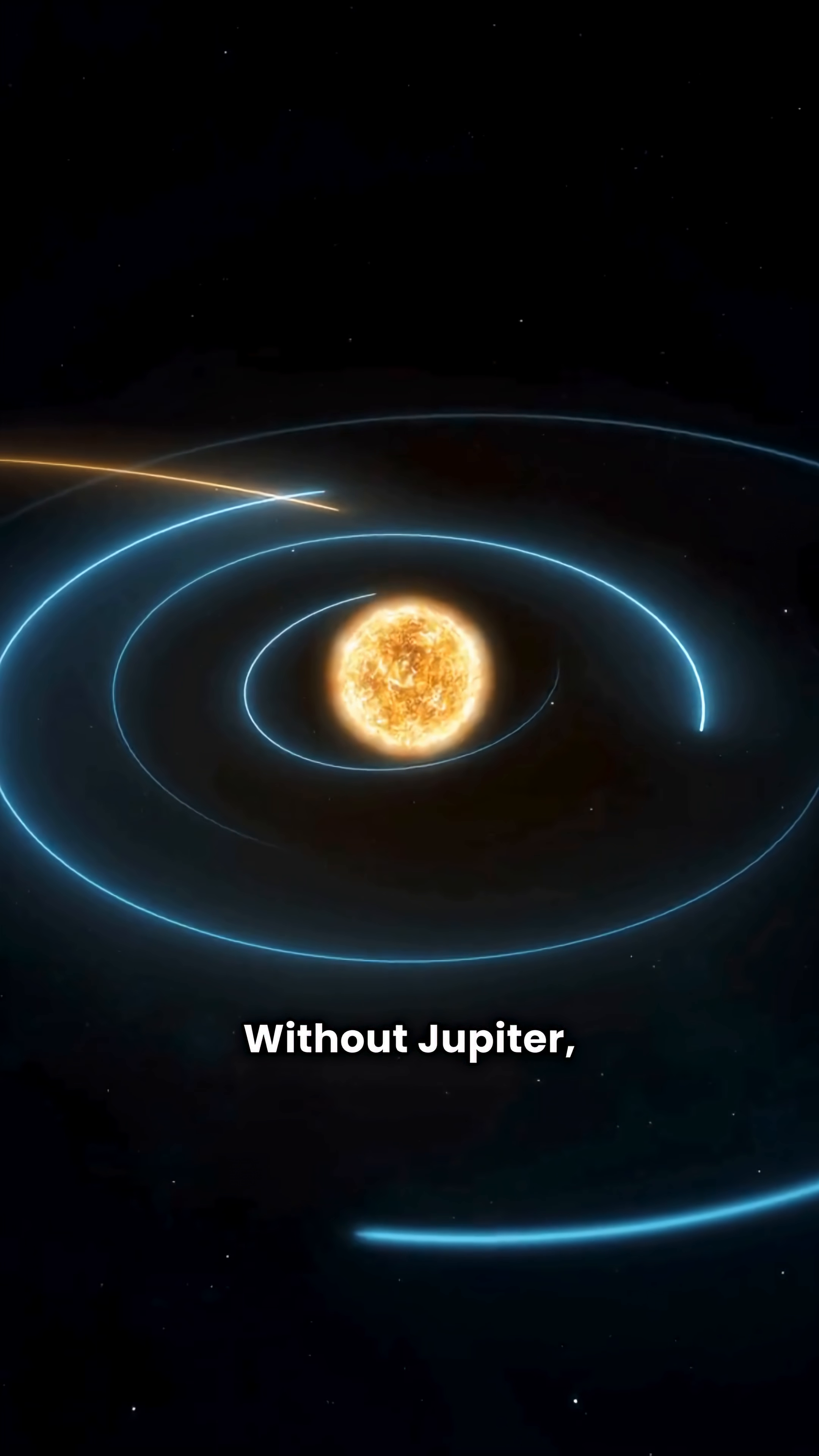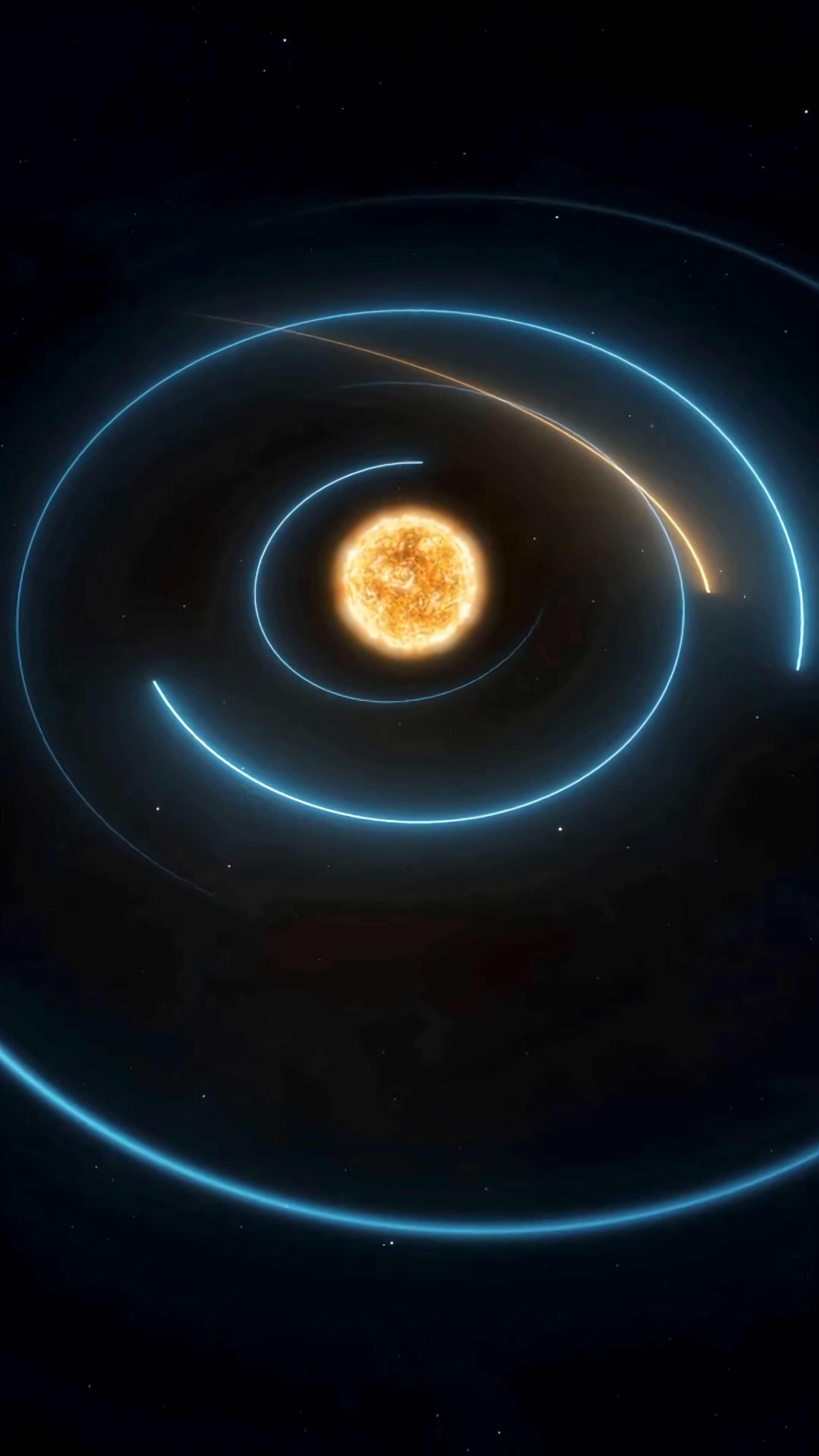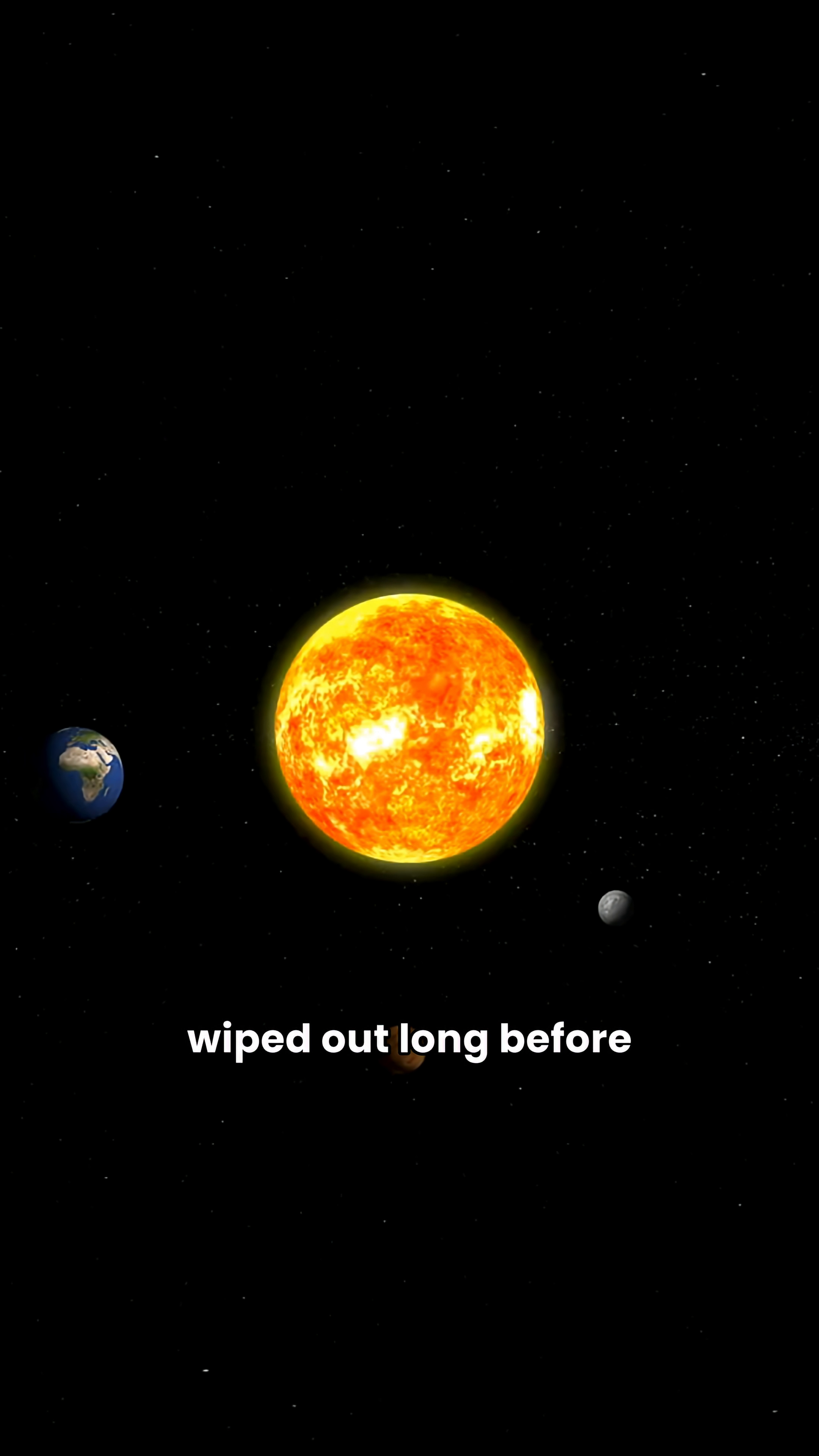Without Jupiter, millions of asteroids and comets would have slammed into Earth. The dinosaur killer asteroid? Multiply that by thousands. Life as we know it would have been wiped out long before humans showed up.